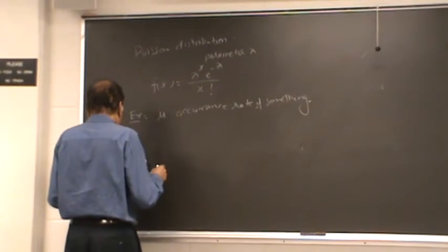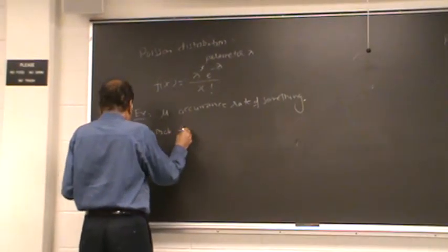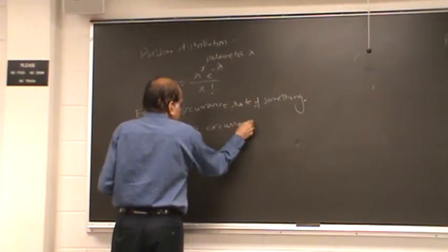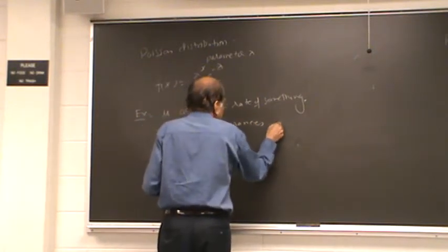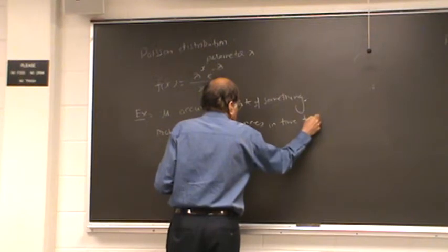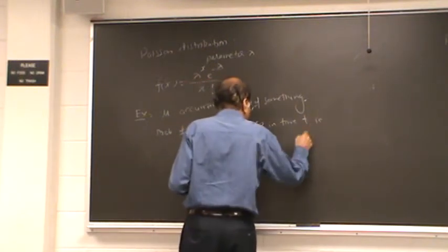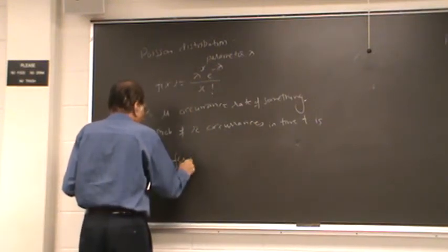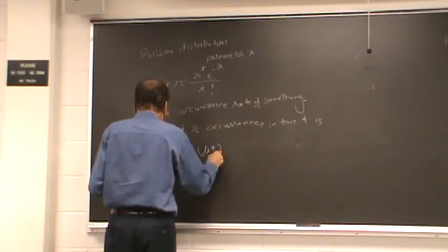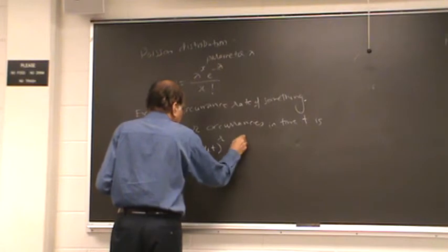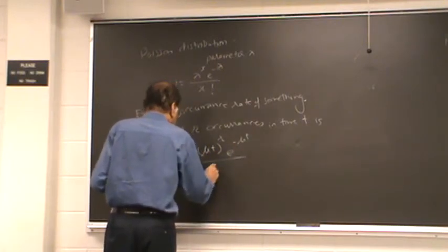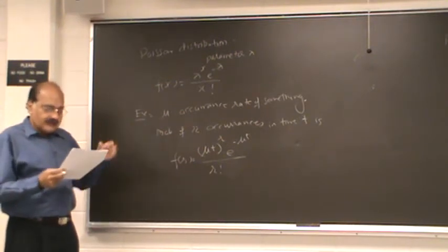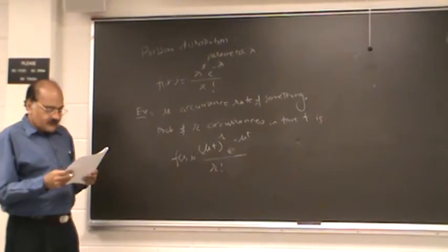And so probability of r occurrences in time t is given by this formula, and we are going to prove it later but not right now. Right now I just wanted to introduce the distribution. We will come back to this, but this is what is referred to as the Poisson distribution.